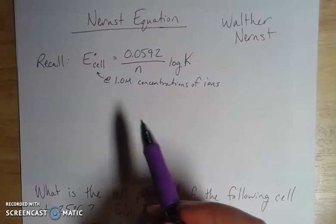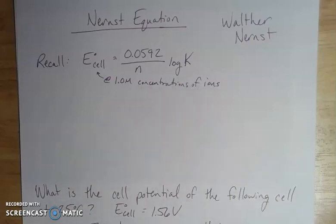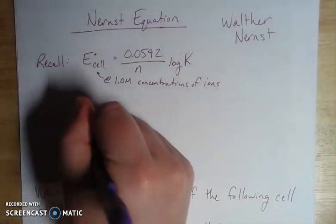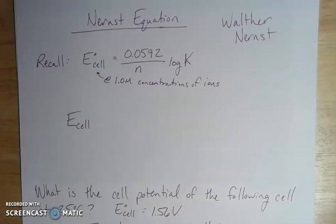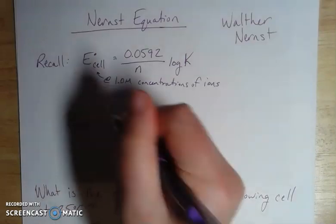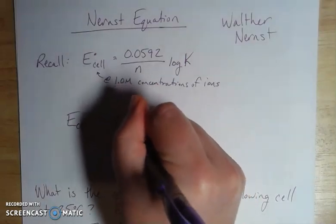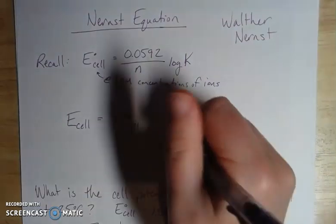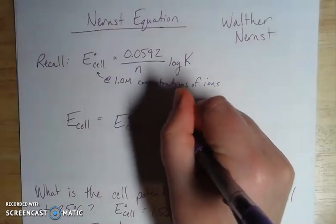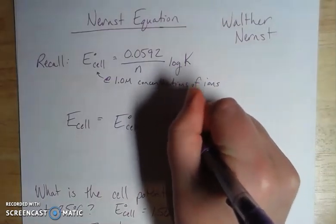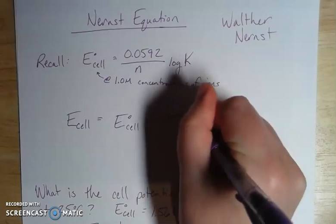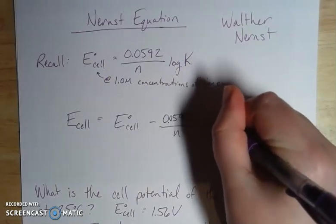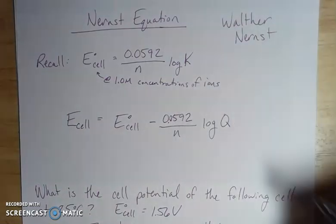When we're thinking about standard reduction potentials that we can find on a list somewhere, it's at 25 degrees Celsius and the concentration of the electrolyte solutions are one molar. But if we're not at these concentrations, then we're not going to be at equilibrium. The Nernst equation gives us a way to relate these concentrations under non-equilibrium conditions to the cell potential.